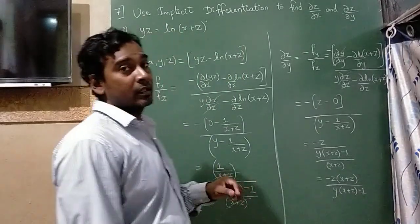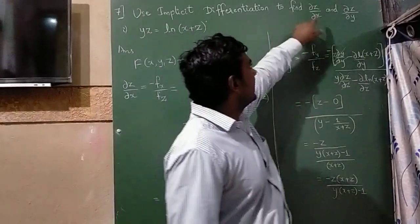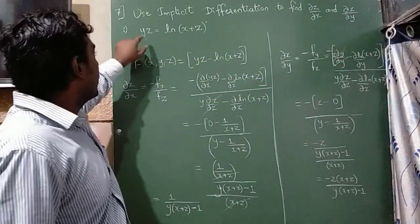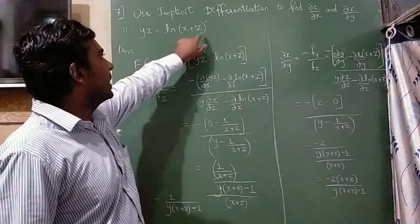Hello students, the next sum is use implicit differentiation to find dz by dx and dz by dy. So the question is yz is equal to log of x plus z.